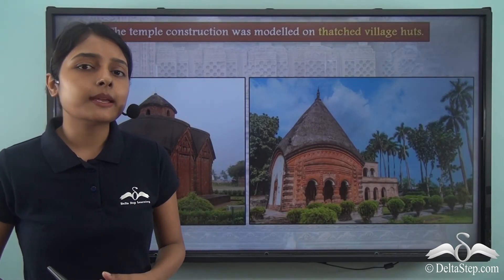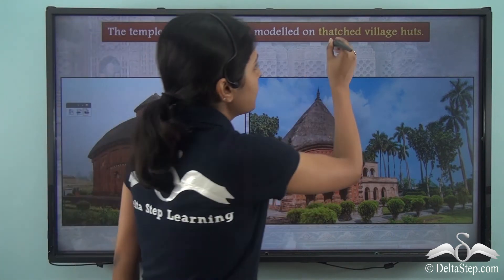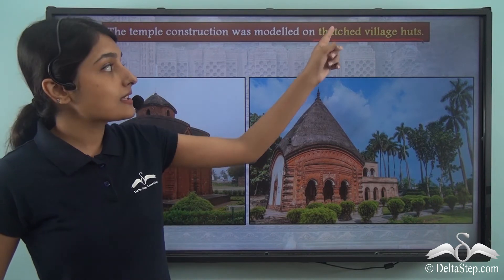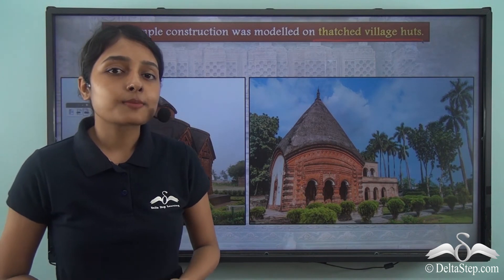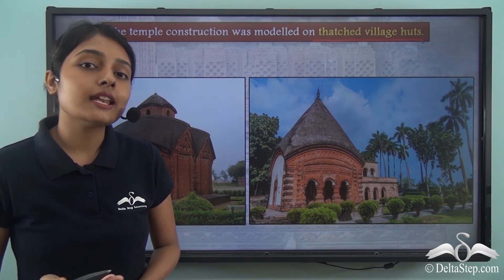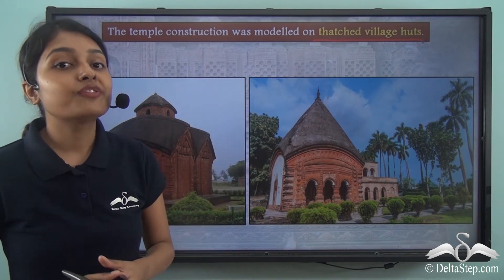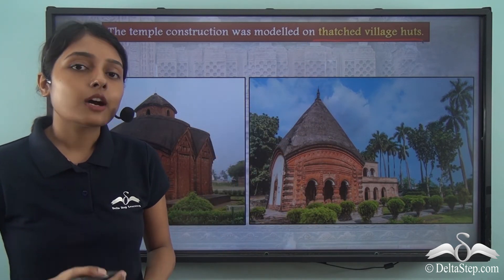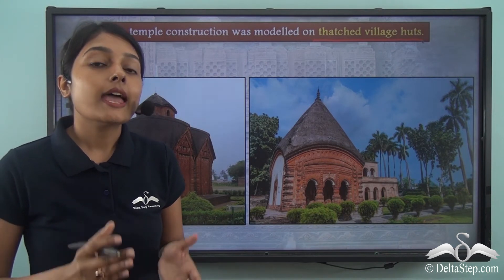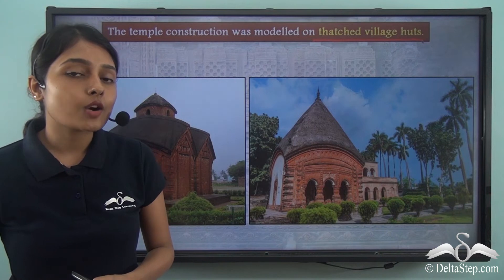Now around this time the temples being constructed by the lower caste members in different parts of Bengal were modelled on the thatched village huts. Just a while ago we talked about how the local deities were initially kept in these thatched village huts. Now when these lower caste members were able to gain the resources required for the construction of temples, they made sure to not let go of their uniqueness and identity. Which is why the temples they made were also modelled on the former thatched village huts. Now these temples could be classified into two categories in terms of the appearance or the layout of the construction.